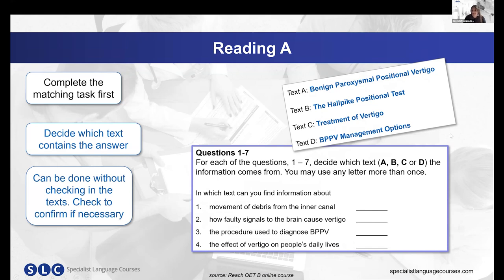We have questions one to four and our headings. Your approach should be to read the statement, underline any keywords, then look at the headings and decide which text. For example: 'movement of debris in the inner ear canal' — we can assume this is not management options, not treatment, not the test; it's in Text A, which tells us more about the condition. Number two, our keywords are 'faulty signals' and 'cause vertigo' — again, not management, not treatment, not the test; we assume it is A.